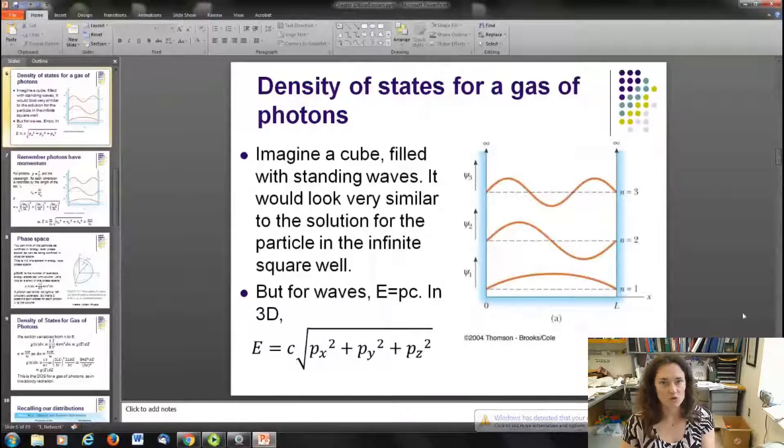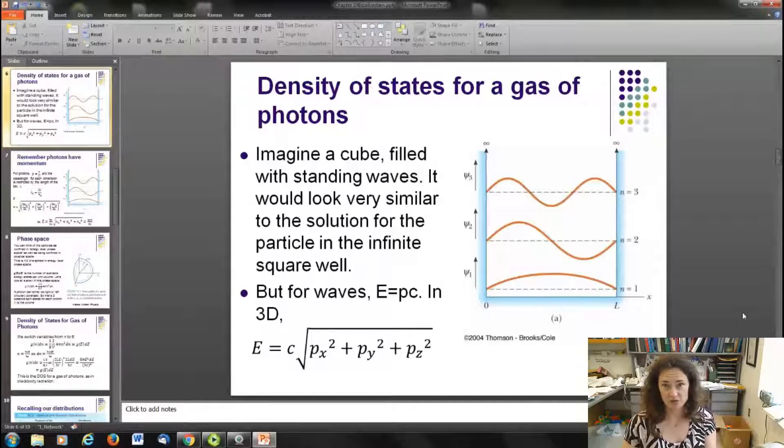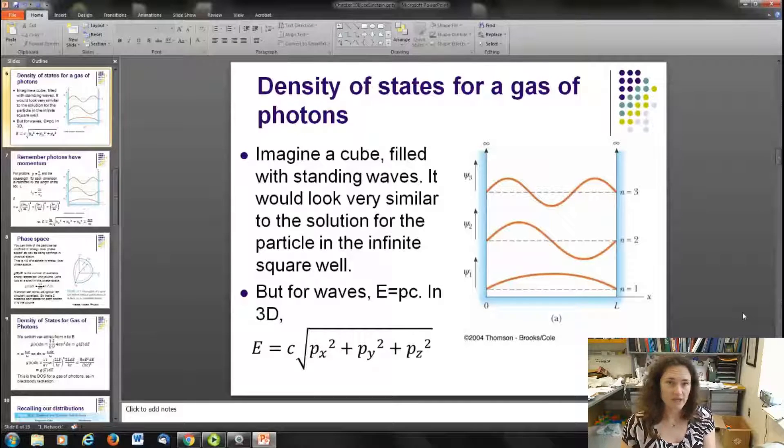Alright, now first, in order to describe Bose-Einstein statistics for black body radiators, we have to develop an expression for a density of states. We can't use the one for a gas of particles that we've been using for the last several lectures, because for black body statistics, you're actually generating a gas of photons. This is the light that gets emitted by a black body radiator. So that's not a particle per se, it's a photon, and they have different kinds of expressions that govern them than do particles.